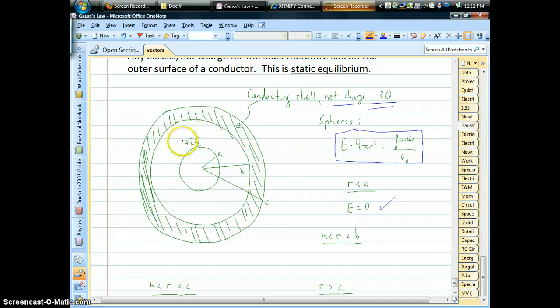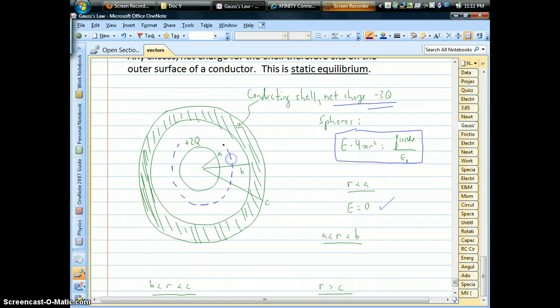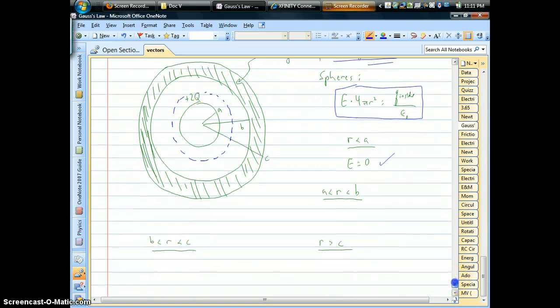So for example, if we're in this region between the shell and that hollow sphere, there's a plus 2q charge there. So Gauss would say the electric field does exist. You have a plus 2q is the charge inside that dashed line over epsilon. So there is a field.